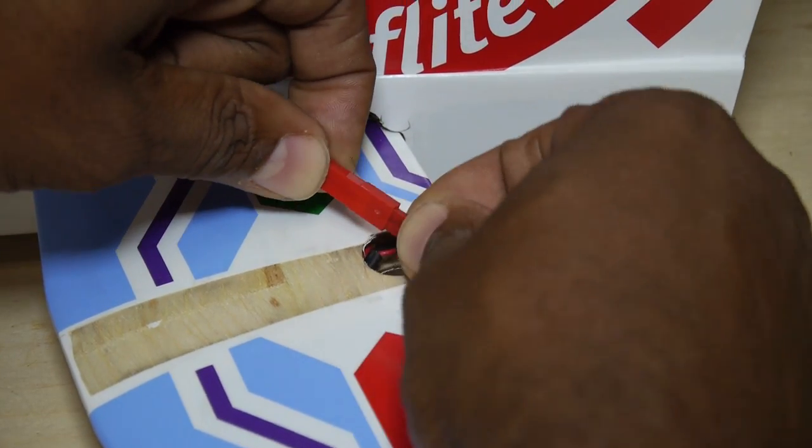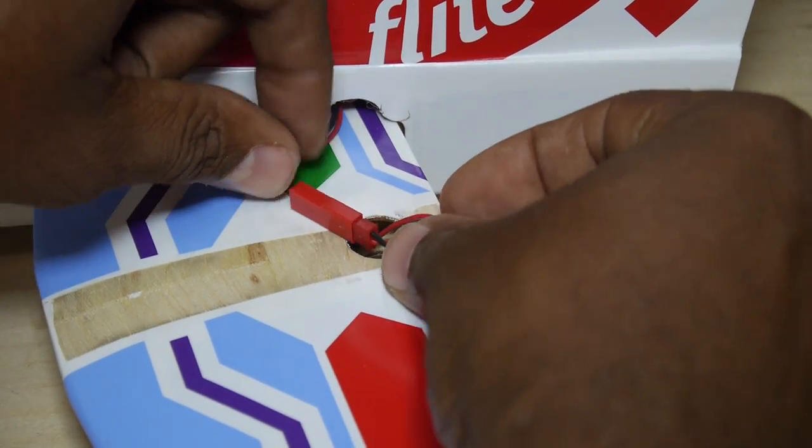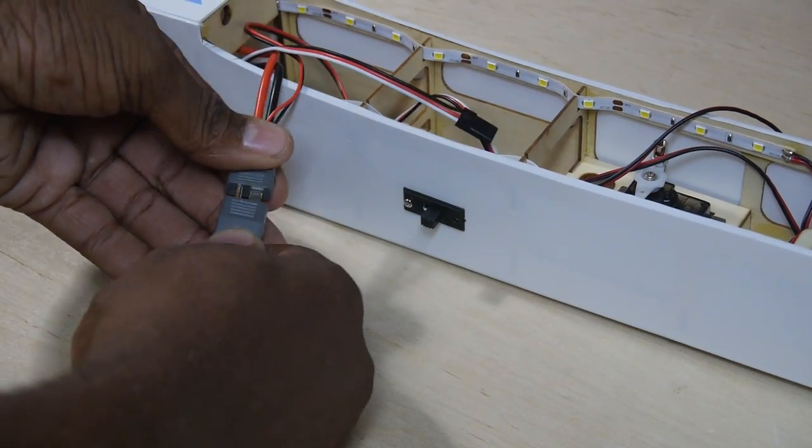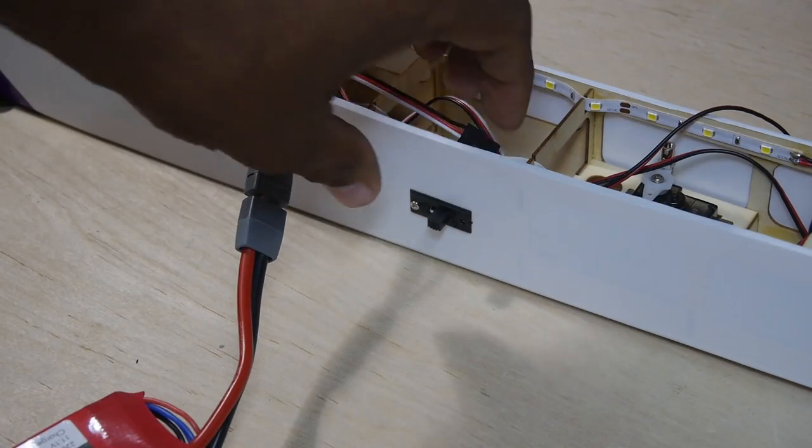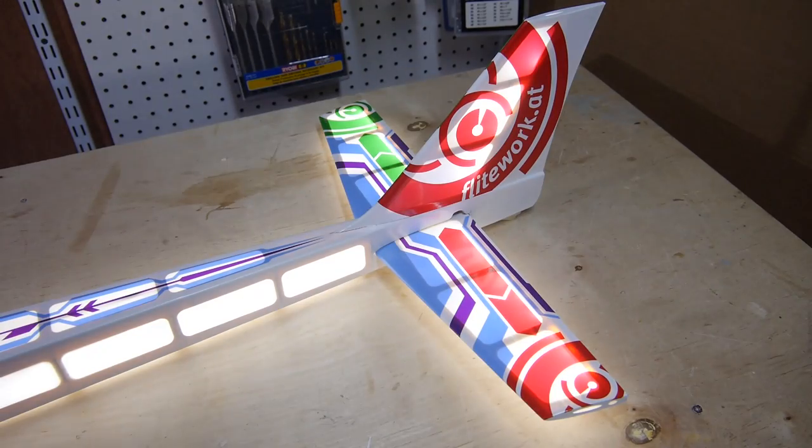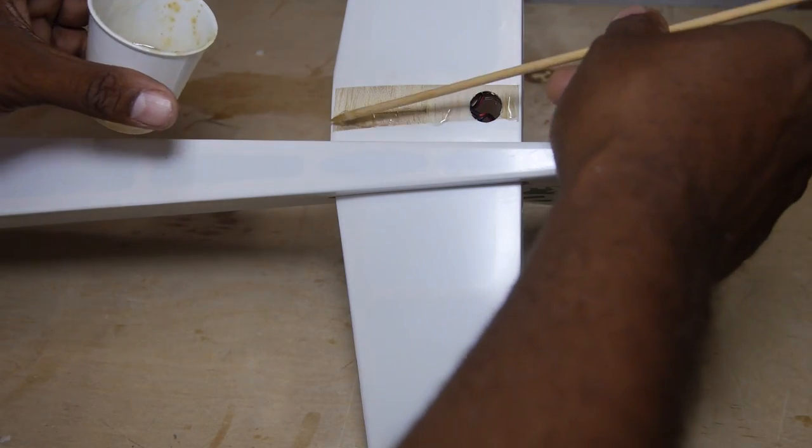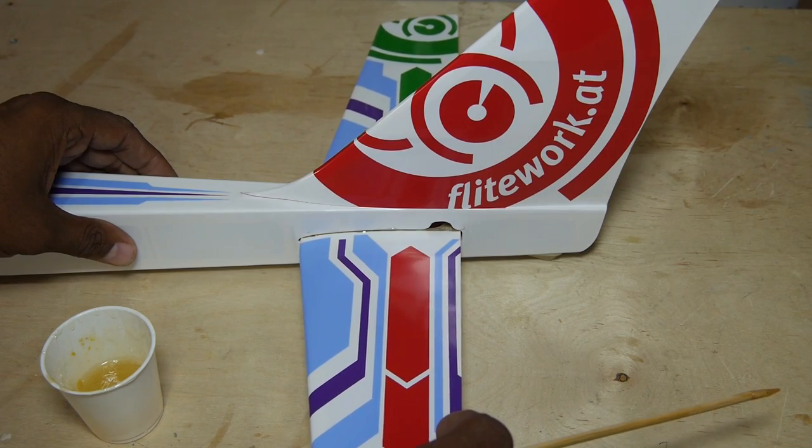Connect the power connector before gluing anything, so as a check that the tail lights are functional. Once assured that photons are being emitted, glue on the tail with thick CA or epoxy.